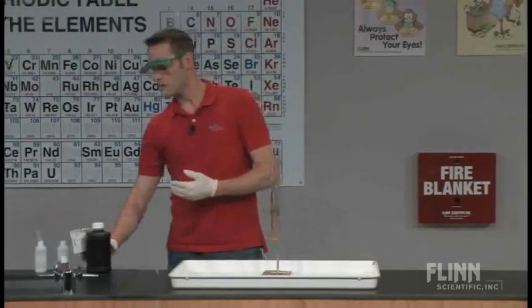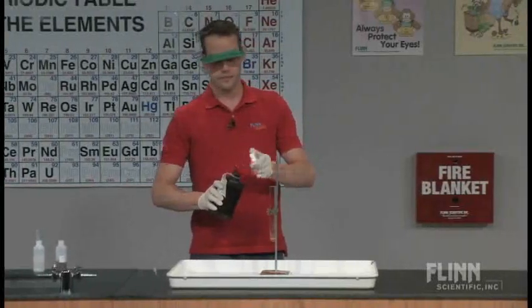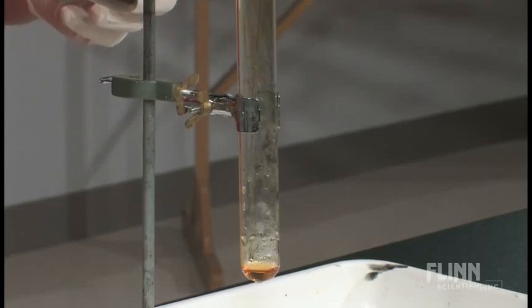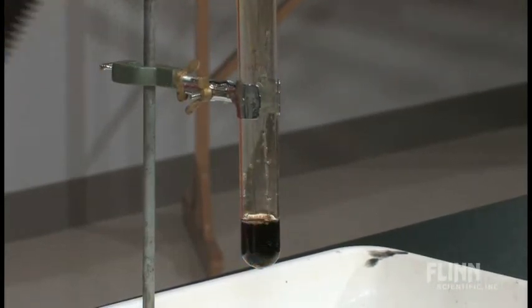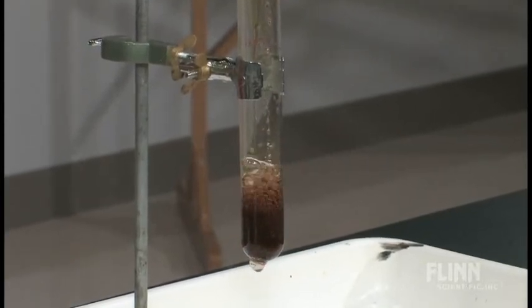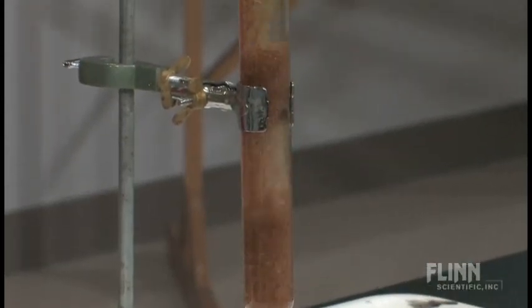So if I pour some more hydrogen peroxide in here, we should see the exact same chemical reaction. And I'll pour just a little bit this time because we just want to see the bubbling. But you can see again that dark brown reaction intermediate is formed, the rapid evolution of oxygen gas.